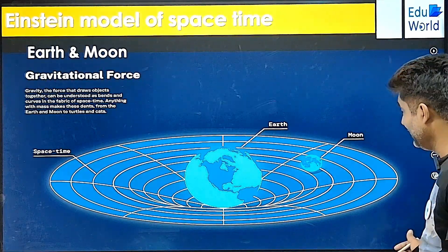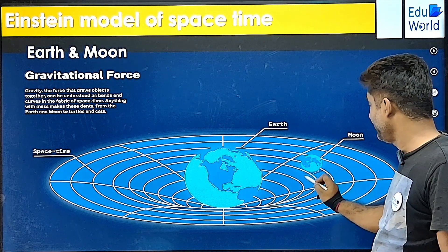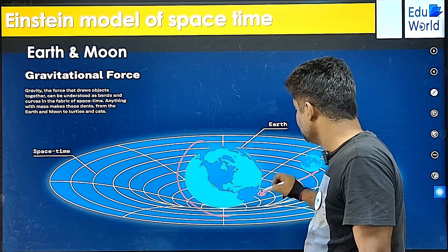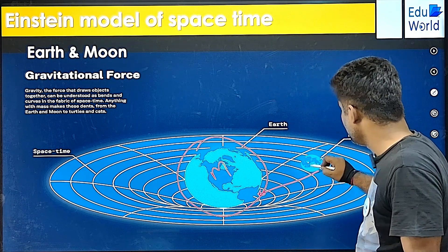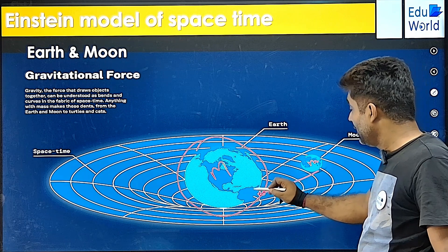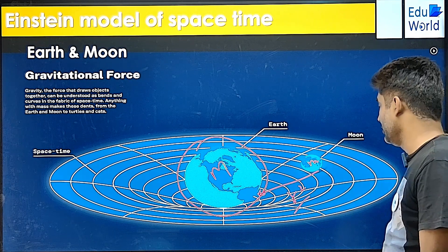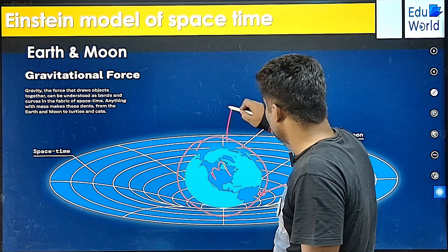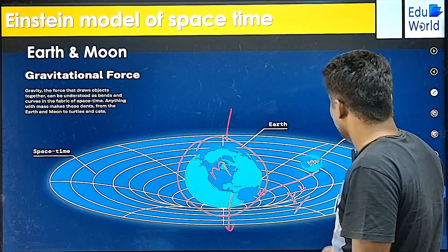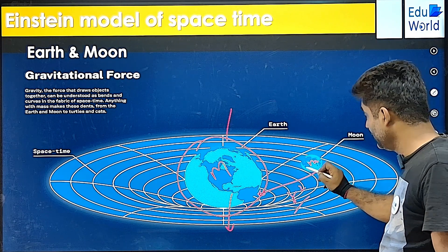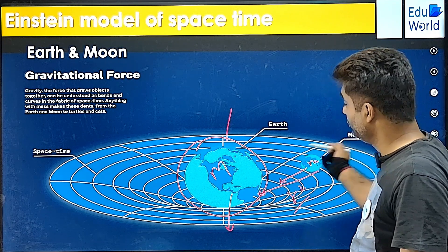Einstein is saying that it is not an existing force. It is just a slope, which is caused by a bigger mass M to a smaller mass m, and it is inversely proportional to the square of the distance between, which was Newton's formula. Because of this heavier mass and the smaller mass, this slope is formed. And because of this slope, this smaller mass is pulled by this bigger mass.